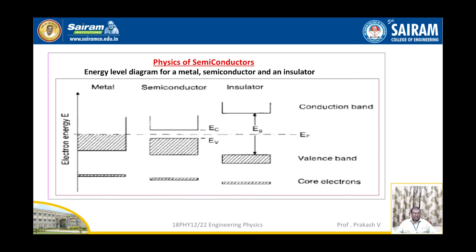Comparing semiconductors and insulators with metals: for a metal, it is observed that electrons already exist in the conduction band. In the case of a semiconductor, there is a narrow gap between the valence band and conduction band. In the case of insulators, there is a large energy gap between the valence band and conduction band.